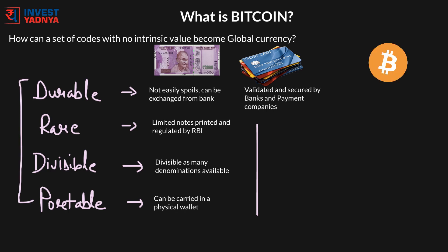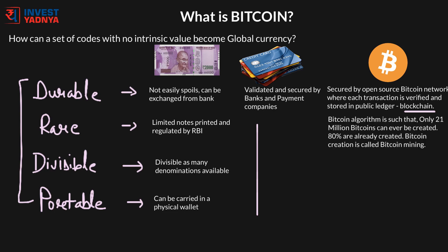Bitcoin is durable as these mathematical codes are secured by the Bitcoin network, where multiple users verify each transaction and record them in a public ledger called blockchain. Since all transactions are public and can be seen by everyone, there is negligible chance of fraud. Bitcoin is rare as only 21 million Bitcoins will ever be created; almost 80% are already created and the rest will be created over the next 123 years. The Bitcoin program is designed so that Bitcoins always remain rare, and experts say this cannot be altered.